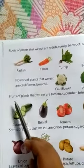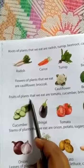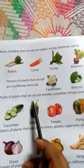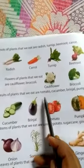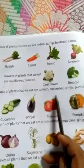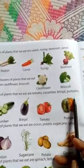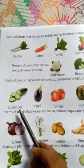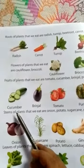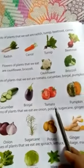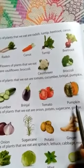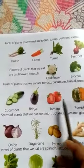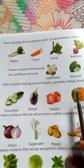Next are fruits of plants. The fruits of plants that we eat are tomato, cucumber, brinjal, and pumpkin. Pictures are also given there — cucumber, brinjal, tomato, and pumpkin. These are the fruits of plants.